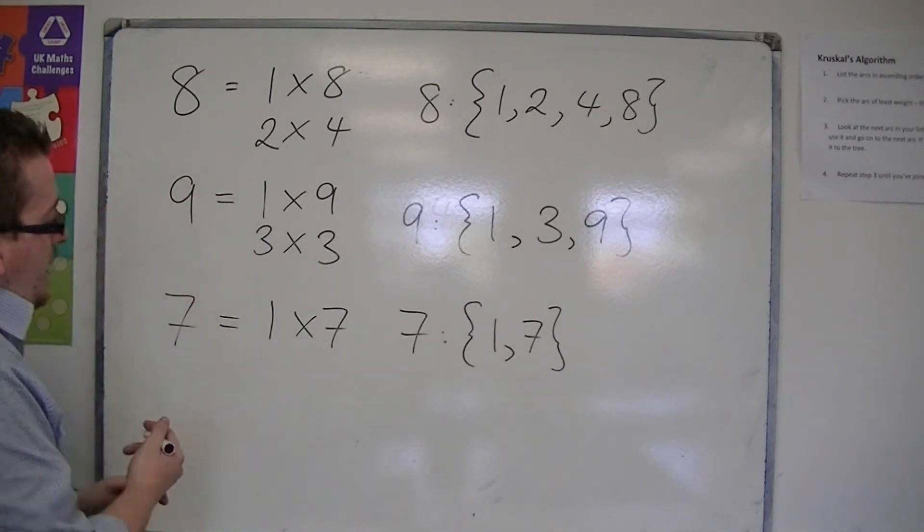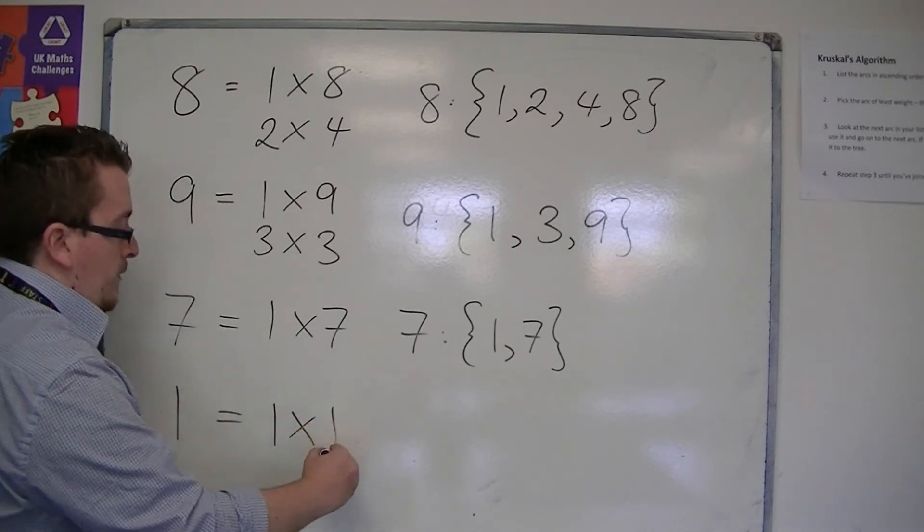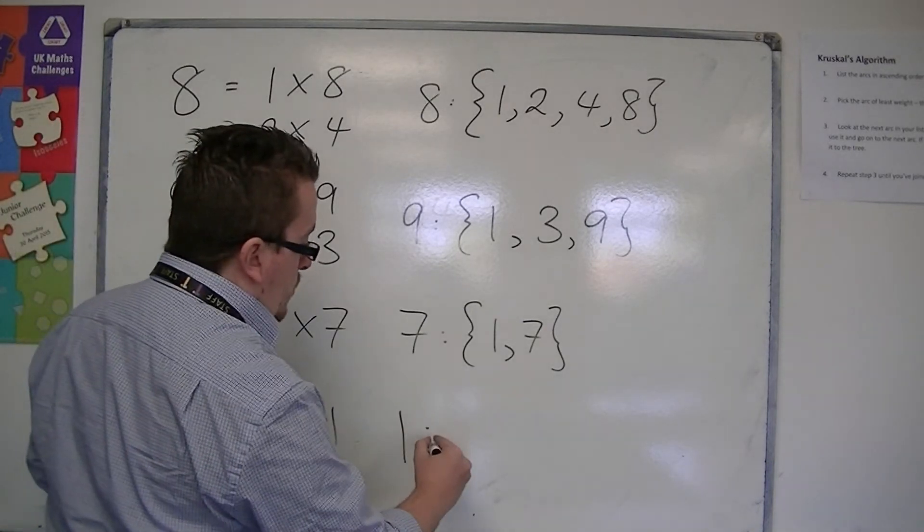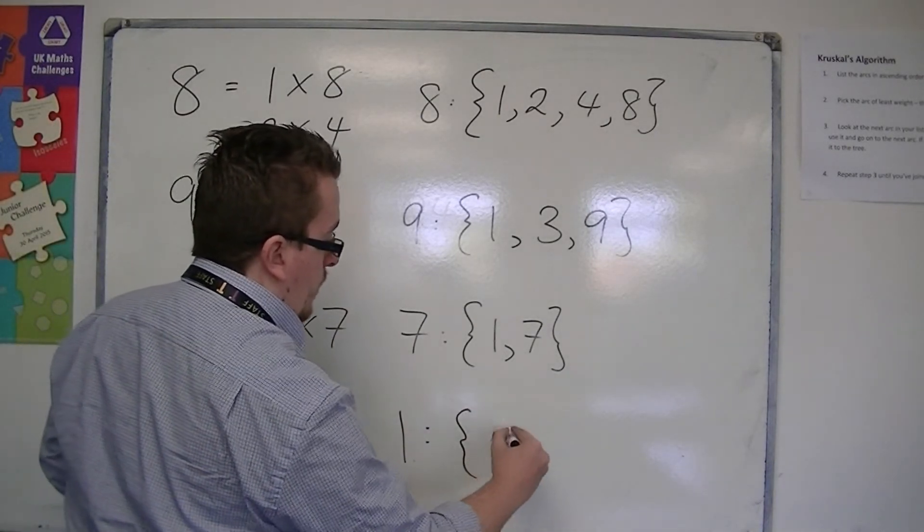Let's also think of the number 1. Well, the 1 can only be found by doing 1 times 1. So, 1 has only one factor itself.